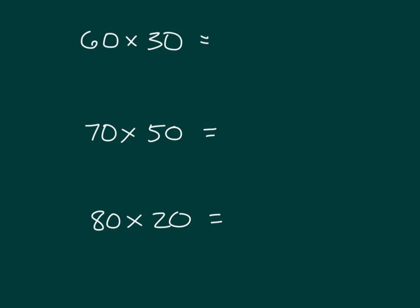Here are three last problems. Would we be able to do this without drawing the area model, using what we've learned? How many tens are in this number? Six. How many tens are in this number? Three. So we take six and multiply by three to get eighteen. We're multiplying tens by tens to get hundreds — eighteen hundreds, which is one thousand eight hundred.